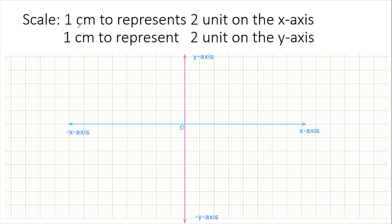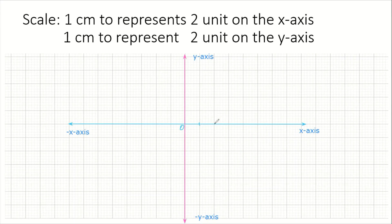Now it says we must use one centimeter to represent two units on the x. First, we need to measure off one centimeter on our x-axis. For every five small boxes, that is going to be one centimeter. So if you measure from the origin here, horizontally, this would be one centimeter. From this stroke to here would be another one centimeter, and from this stroke to here would be another one centimeter, and so forth.